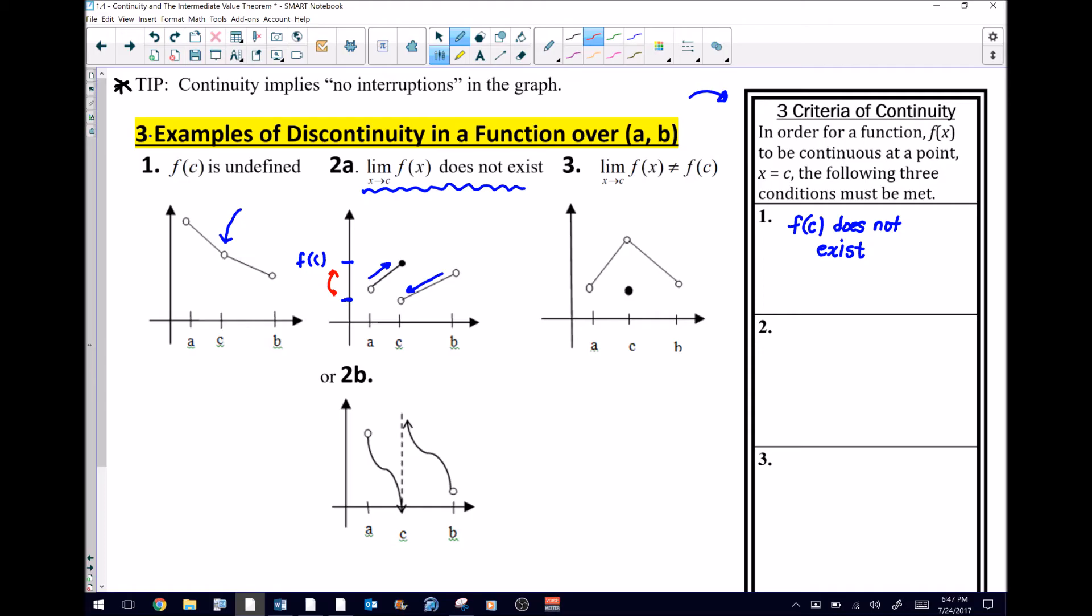So let's turn that around. What has to happen in order for the function to be continuous? What about the limit must be true? That particular case would be that this limit as x approaches C of the function f of x must exist.